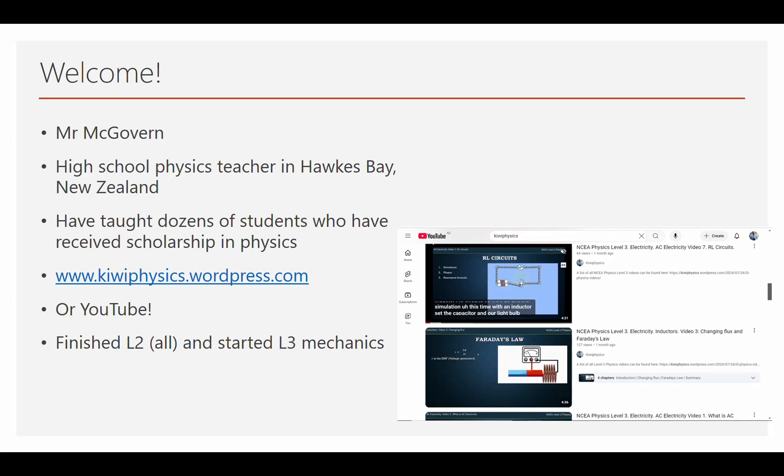So what you need to get through this course is hopefully you've finished all of level two. When I say all, I really mean mechanics, electricity and modern physics. And you've at least started level three mechanics. So you don't need to have finished level three the whole course to start practicing for scholarship, and that's the whole point of this.